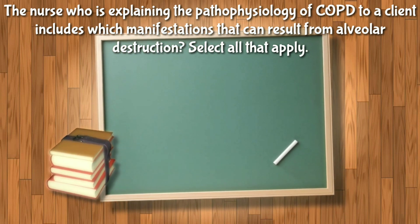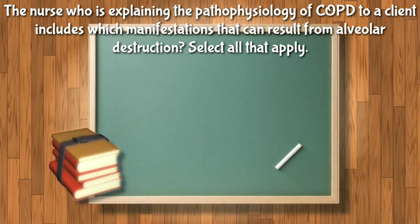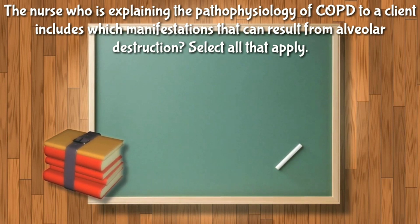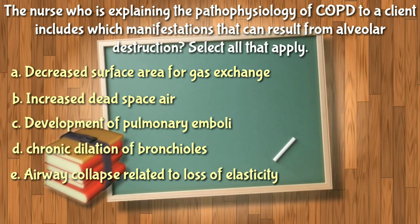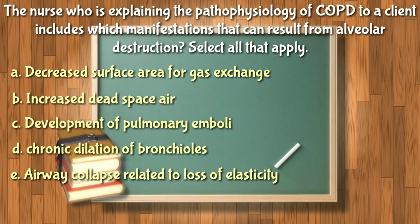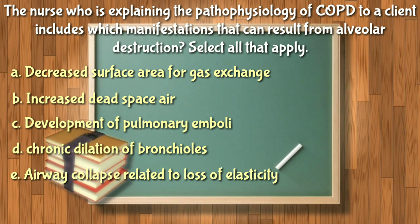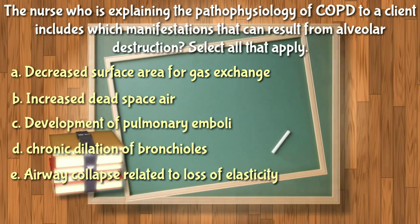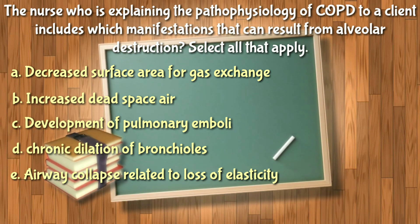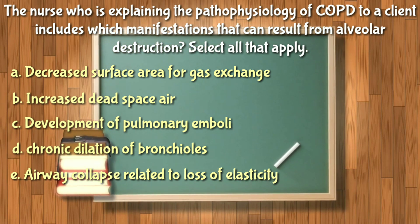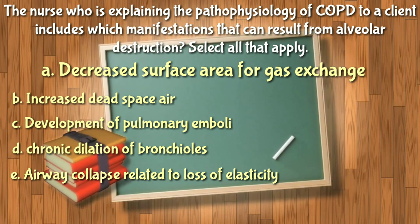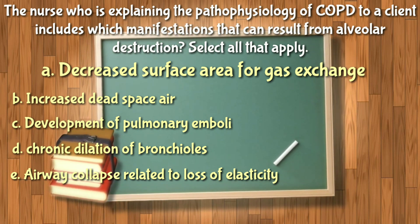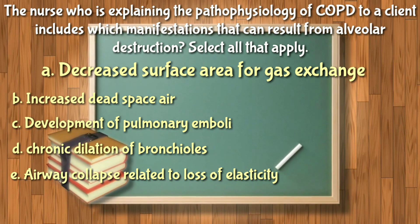Next question: The nurse explaining the pathophysiology of COPD includes which manifestation that can result from alveolar destruction? Select all that apply. With COPD, there is impaired gas exchange caused by the loss of alveolar surface area available for gas exchange — letter A is included. There is also a loss of elasticity in the airway attributed to repeated infections and inflammation.